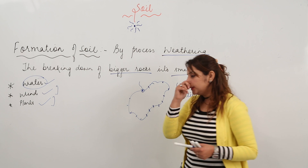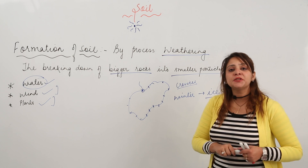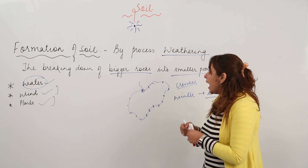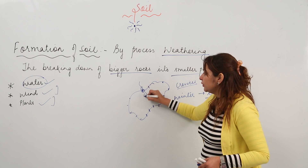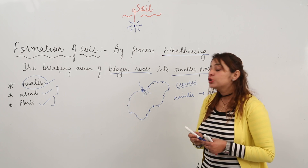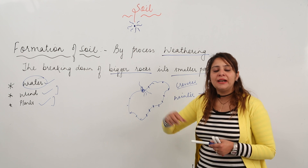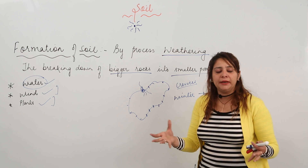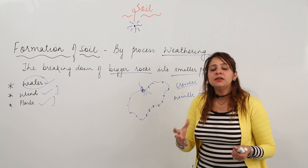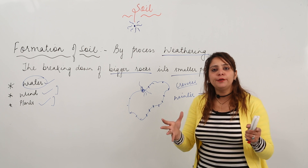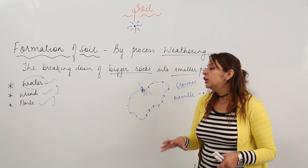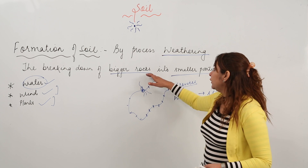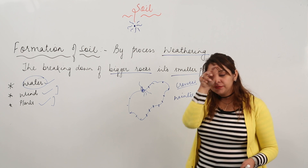Wind also influences weathering. Third, plants — we have seen that plants grow on rocky surfaces and their roots penetrate into the rocks through the cracks. When roots penetrate through the cracks, they make the cracks bigger, and finally the rock is weathered — converted from bigger rocky material into smaller ones.